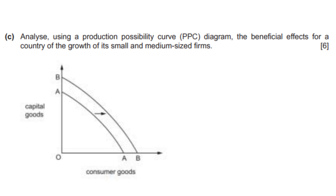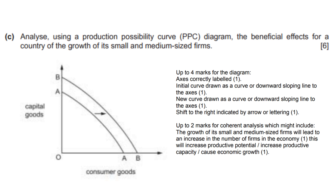To draw this diagram, first label the axes correctly — this will give you one mark. Then draw two curves showing an outward shift, because more firms means greater labor productivity and more output of goods and services. Show the shift with an arrow for another mark. For the remaining 2 marks, you can say the growth of small and medium sized firms leads to an increase in the number of firms in the economy, and that this leads to more productivity, hence causing economic growth.